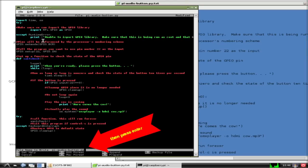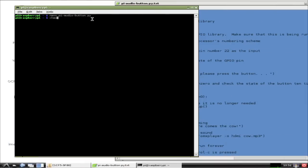The last thing to do to your code is to make it executable. If you don't do this, the program won't run. So you have to type in chmod space plus x space pi dash audio dash button dot py, then press enter.